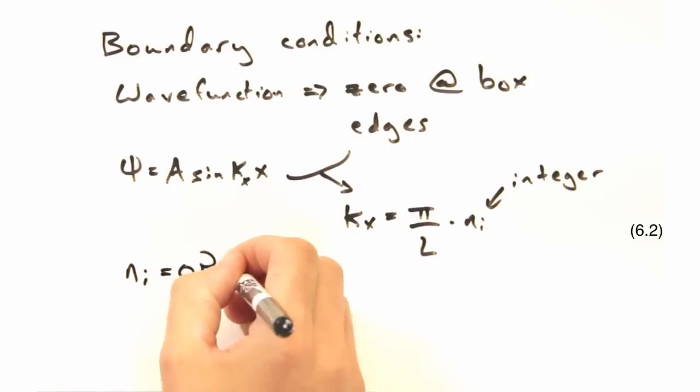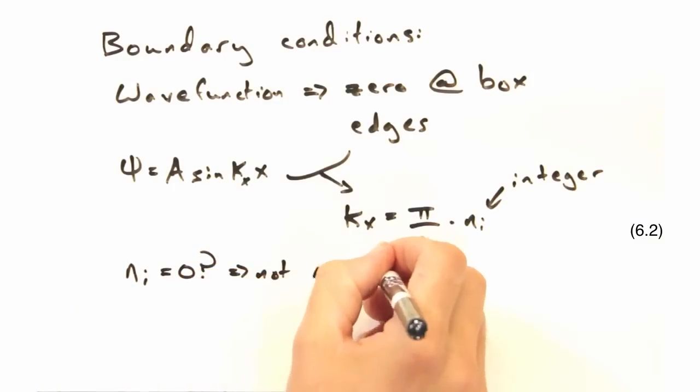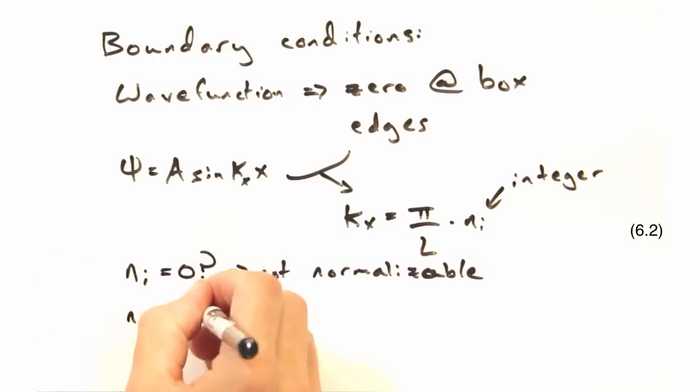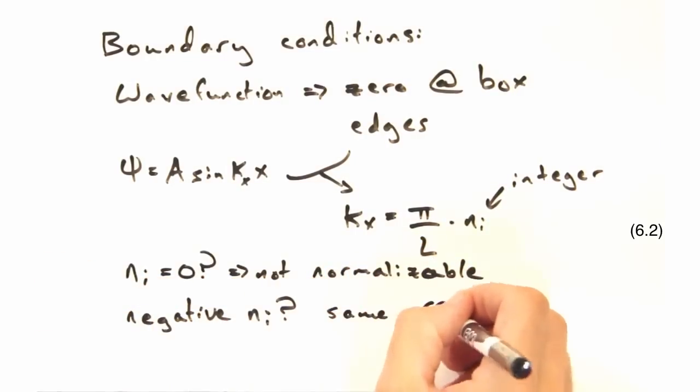Can we use zero? Well we could, but then that makes psi equal to zero. Pretty hard to normalize that. And what about negative values for ni? It would basically just give us the same wave function, so there's no sense in using that either.